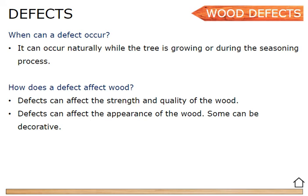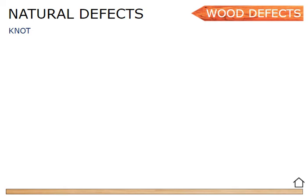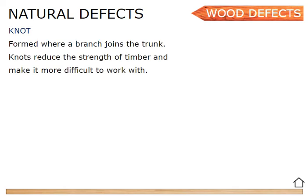Some defects can be decorative — in other words, they can look nice. For example, some people like knots in the timber. Knots are actually the first type of defect we're going to look at. There are two types of knots. But first of all, what is a knot and how is it formed? A knot is formed when a branch joins the trunk. Anywhere there's a branch coming out from the trunk, there would be a knot in the timber there.